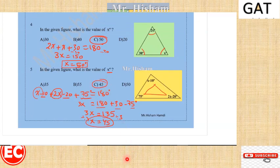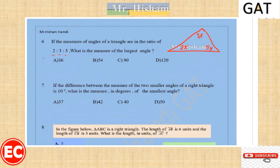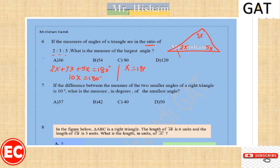Question six: the measures of angles in a triangle are in the ratio 2 to 3 to 5. We assign the angles as 2x, 3x, and 5x. Since the sum of interior angles is 180, we get 10x = 180, so x = 18 degrees. The smallest angle is 2x = 36 degrees, and the largest is 5x = 90 degrees.